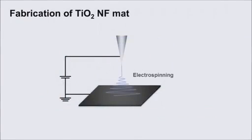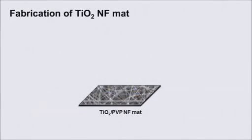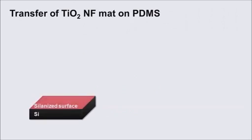To fabricate titanium dioxide nanofiber mats on silicon substrate by electrospinning, the silicon substrate is first silenized, coated with PDMS, and pre-cured.